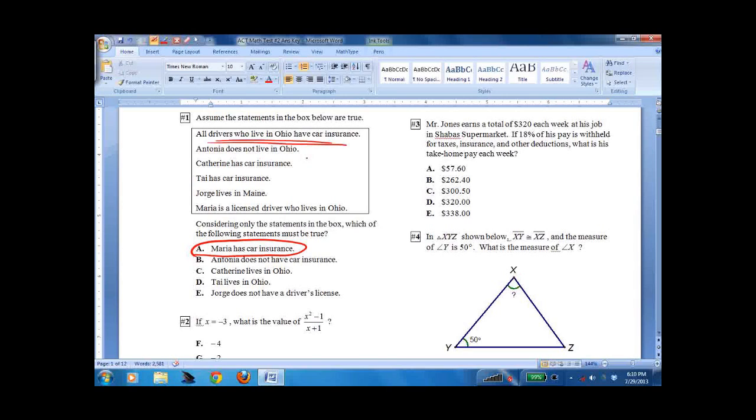Antonia does not live in Ohio and does not have car insurance. Maybe, maybe not. Catherine lives in Ohio, but we don't know if she's a driver. So leave that one alone. Ty has car insurance, and he lives in Ohio. Not necessarily. Could live somewhere else and have insurance. Jorge lives in Maine, and he does not have a driver's license. We don't know if he does or doesn't. Could be anything.